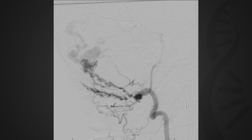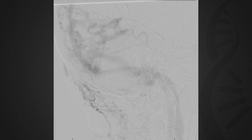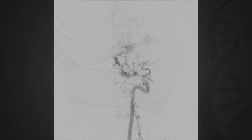Additionally, the artery of Bernasconi and Cassinari off the left internal carotid artery provided further supply to the complex fistula. The fistula's pouch appeared to run parallel to the transverse sinus on the left. There did not appear to be any evidence of outflow restriction involving the left sigmoid sinus and internal jugular vein.